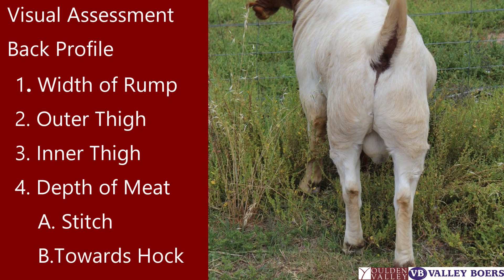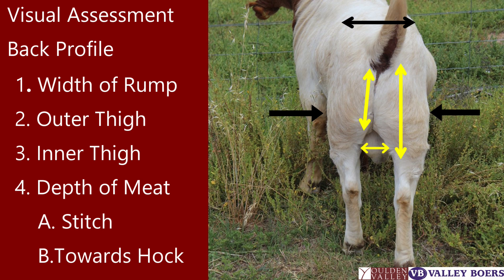So you can see from the back profile there are a number of aspects to consider: the width of the rump, the outer and inner thigh, and the depth of meat at the stitch and down towards the hock.